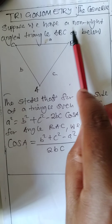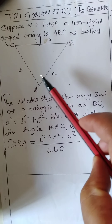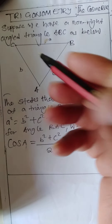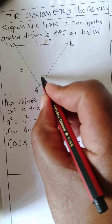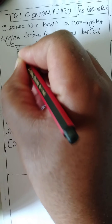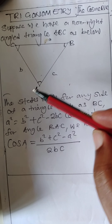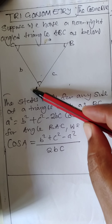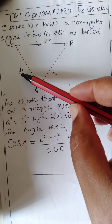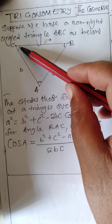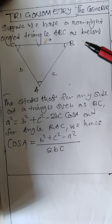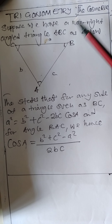Suppose we have a non-right-angle triangle ABC. You have triangle ABC, and when we are dealing with the cosine rule, this is angle A, this is angle B, and this is angle C. When dealing with the sine rule, the side opposite angle A, which is side BC, is denoted by small letter a. If this is B, that side AC is noted by small letter b. If this is angle C, side AB opposite angle C is denoted by small letter c.